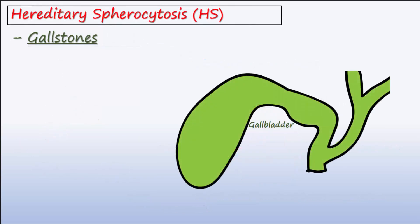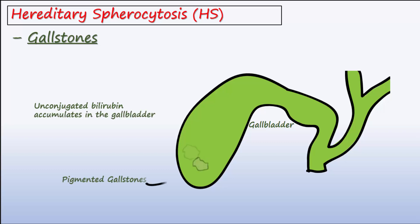Those with HS are also prone to developing gallstones. Abundant unconjugated bilirubin from excess breakdown of red blood cells accumulates in the gallbladder, causing pigmented gallstones.